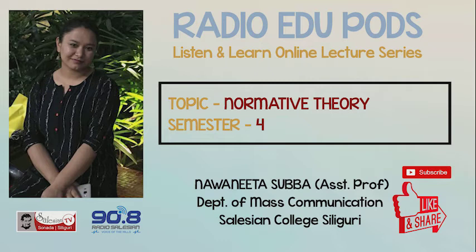The third theory is the social responsibility theory. The theory lies between authoritarianism and libertarian theory as it emphasizes the obligation of media towards society alongside press freedom. The theory was developed in America in 1947. At that time, there was a growing concern that rampant privatization of the press was causing problems in society, and for this the commission on press freedom was established. The theory emphasizes that the media has certain obligations towards society, mainly informativeness, truth, accuracy, objectivity, and balance.